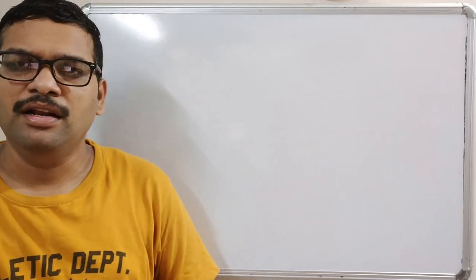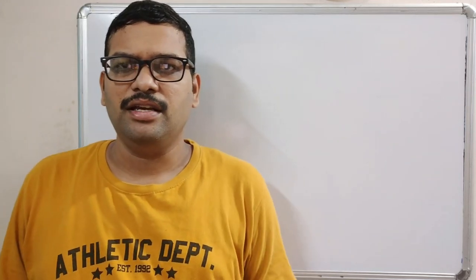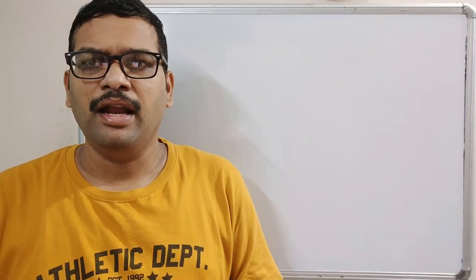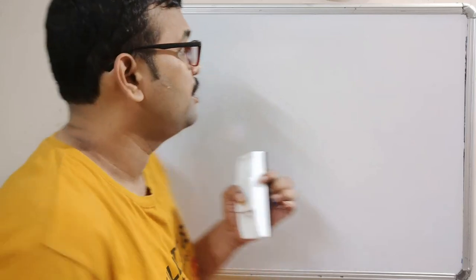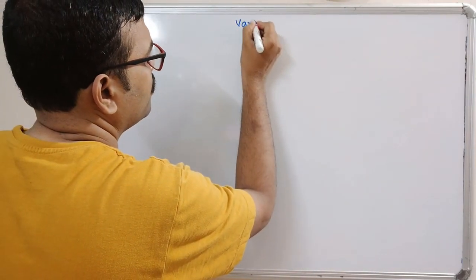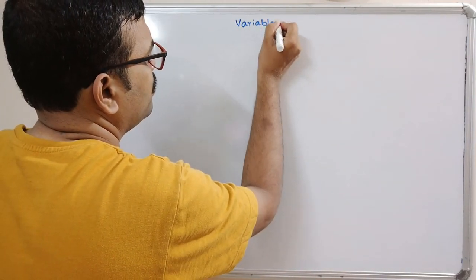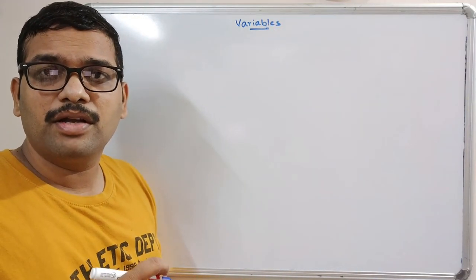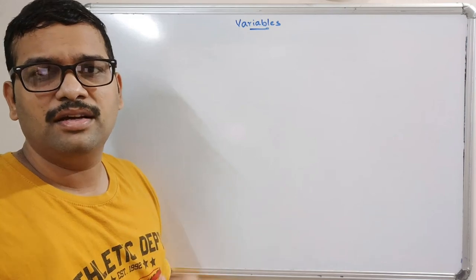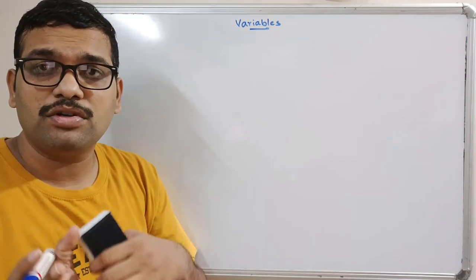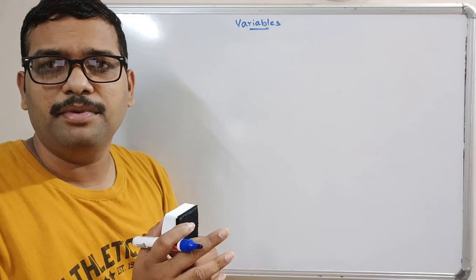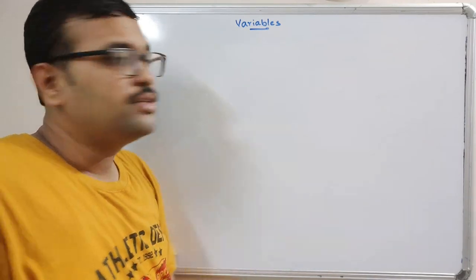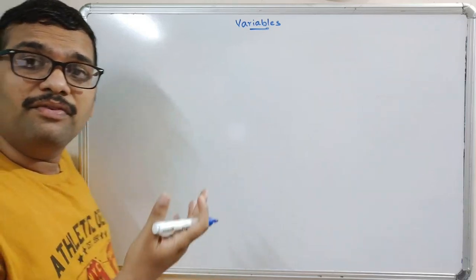Hello friends, welcome back to our channel. In today's session we will see a small concept in JavaScript — variable declaration and initialization. We all know that a variable is a memory location which holds the data, so we are supposed to store some data into that particular variable, and for that variable we give some names. So how do we declare variables in JavaScript?